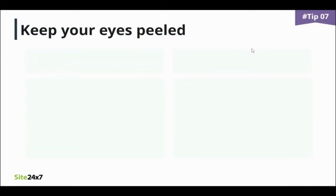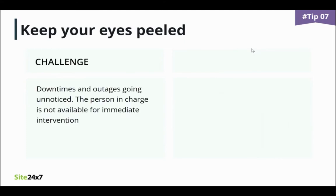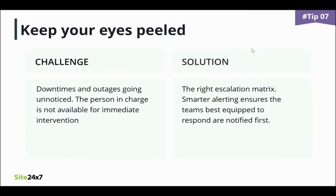Keep your eyes peeled — you definitely don't want downtime to get you down. What's more important than mere alerting is that the teams best equipped to respond are notified first. That's where smarter alerting comes in. When setting up monitoring and alerting, it is vital to have a policy on who has to be alerted when an issue occurs. Based on that policy, the right person who administers the affected aspect can be alerted, reducing the time needed for analysis and further reducing the MTTR. If the person in charge is not available or takes longer to resolve the issue, an escalation matrix ensures issues are looked at and resolved on time.